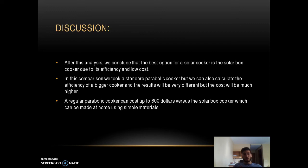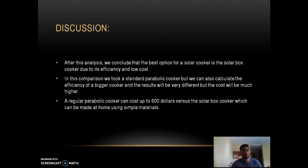After this heat transfer analysis on both designs, the solar box cooker is the better option due to its efficiency and low cost. While a larger parabolic cooker would yield different results, its cost is much higher — a regular parabolic cooker can cost up to $600. The solar box cooker can be easily crafted at home; the simplest version can be made using a pizza box, with tutorials readily available on YouTube.